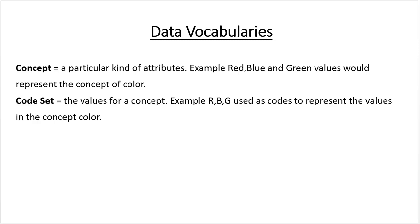Data vocabularies. A concept in a data vocabulary is a particular kind of attribute. For example, red, blue, and green values would represent the concept of color. A code set contains values for a concept. For example, if you used R, B, G as codes to represent the values in the concept of color.